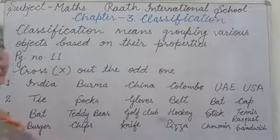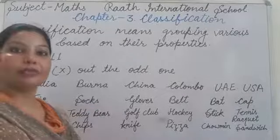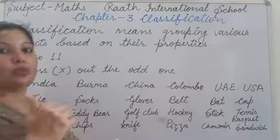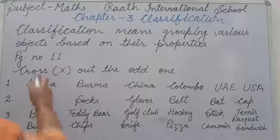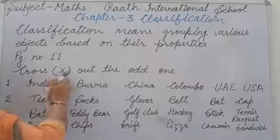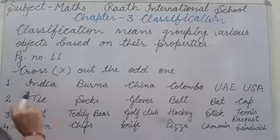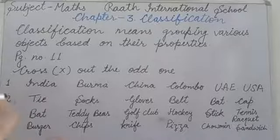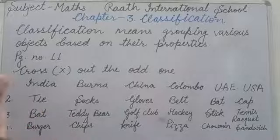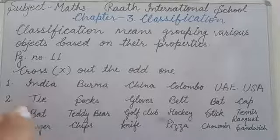So here some objects are given. We should identify their quality, and which are similar — that we have to identify — and which one is different, that we have to cross out. So let me start page number 11. Cross out the odd one. Jo alag hai usko hume cross karna hai. So some are similar and one is different from them. That one we have to cross — classify karenge, usse hume pehchaan ke, jo different hai usko hum alag karenge.